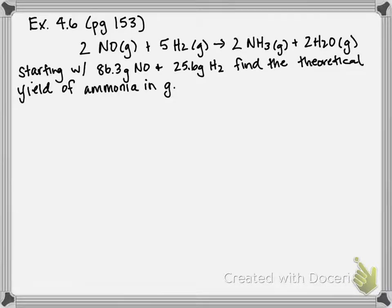This is example 4.6 on page 153 of your textbook, and here we're going to be utilizing the concept of limiting reactants and theoretical yield. We're going to apply the concept of stoichiometry to do this. In the problem, they give us a balanced equation for the production of ammonia, and they give us two different starting amounts for each reactant.